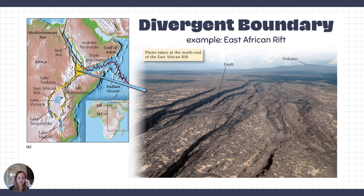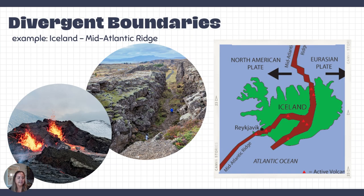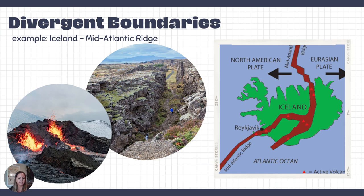This rifting and volcanism also occurs actively in Iceland. Iceland is situated right on top of the Mid-Atlantic Ridge, which runs north-south through the entire Atlantic Ocean. It happens to prop up onto land in Iceland in the Northern Atlantic Ocean, where we can see a huge rift — a crevasse being created in the middle of Iceland — as well as a lot of volcanism.